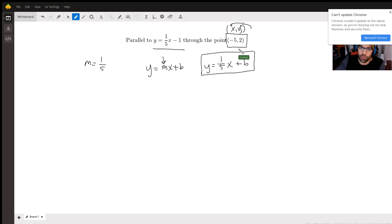So here, I'll let y equal two and then I'll let x equal negative five. So when I simplify this, I have two equals one-fifth times negative five is negative one plus b. And then I just add one to both sides and I get three equals b. And so that's our value for b.